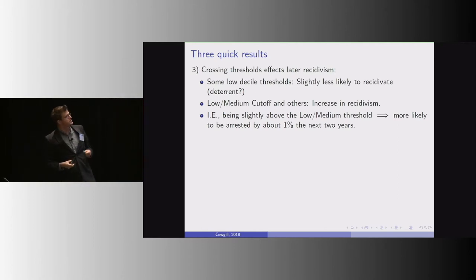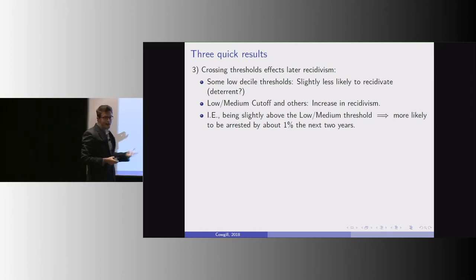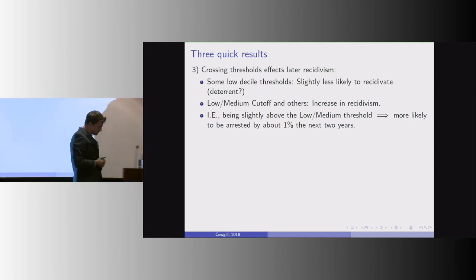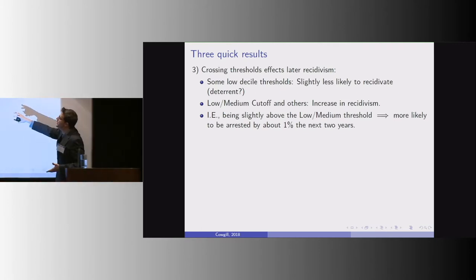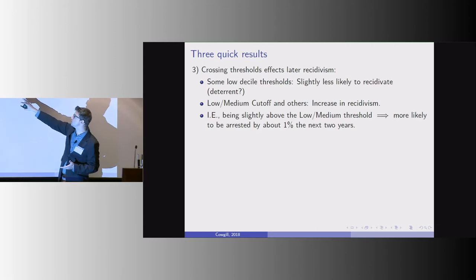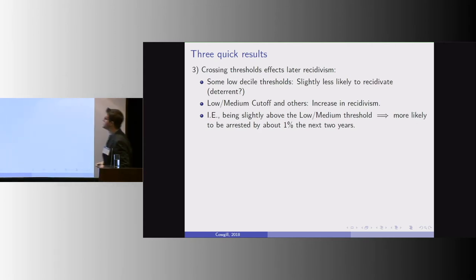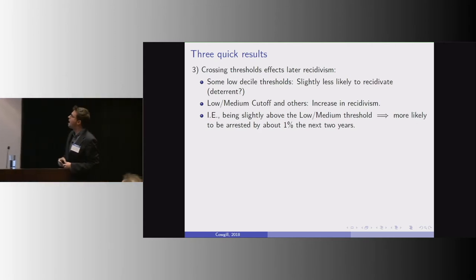According to the algorithm, there's a negative effect. So you're actually slightly less likely to have recidivated within two years. This is consistent with the extra jail time being a deterrent. But for most of the cutoffs and most of the deciles and the low-medium cutoff, there's an increase of recidivism about on the order of 1%.